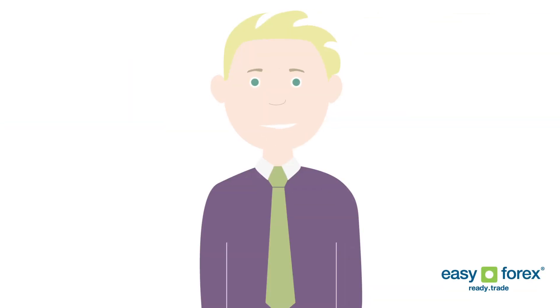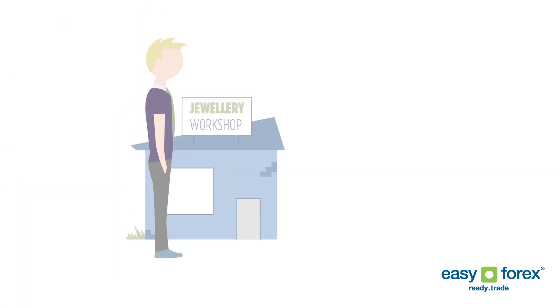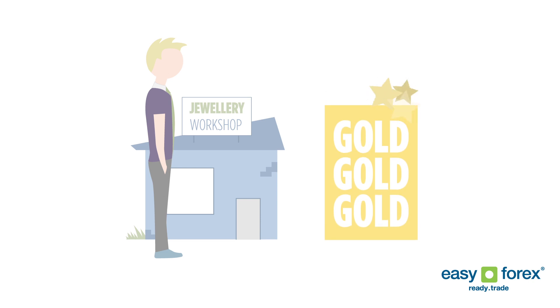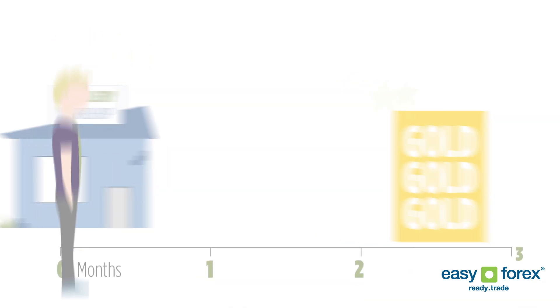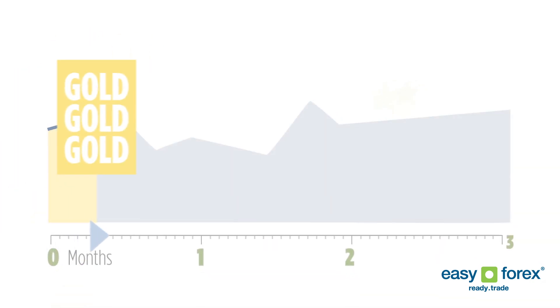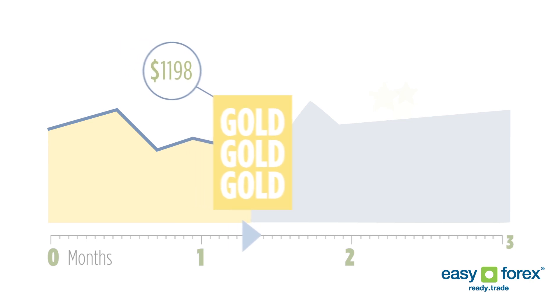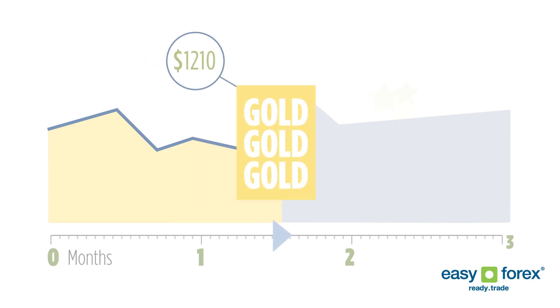Let's see how options work in this example. John has a small jewelry workshop. He buys gold to make jewelry and sell it. John buys 100 ounces of gold from his supplier every three months. He's aware that gold prices may change, and he wants to get fixed prices for his future purchases.